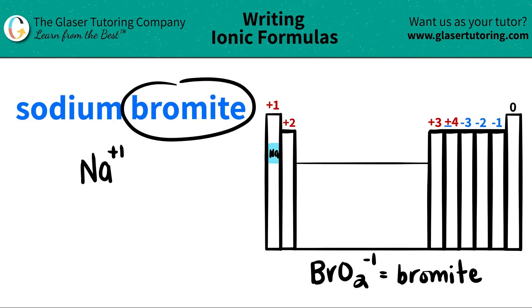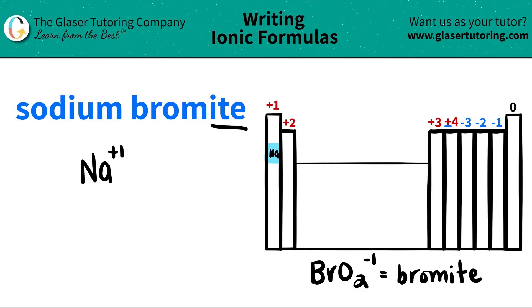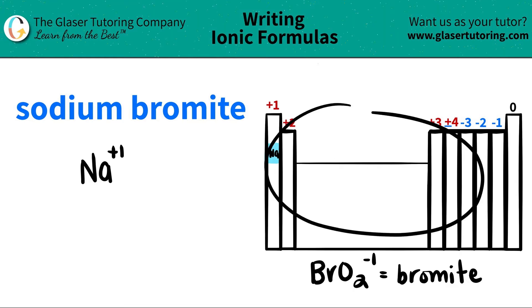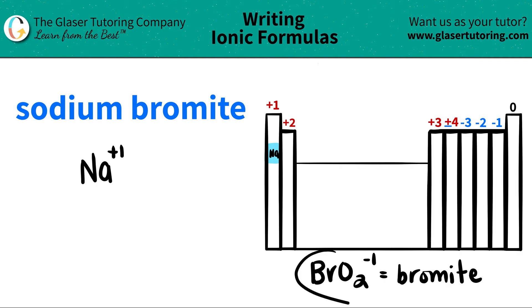Now bromide — here's the trick, guys. If you have an I-T-E ending, you know that this is a polyatomic ion. So you have to memorize them. Polyatomics are never going to be on the periodic table. So use flashcards, do whatever you got to do to memorize these polyatomics. They're never going to go away, unfortunately.